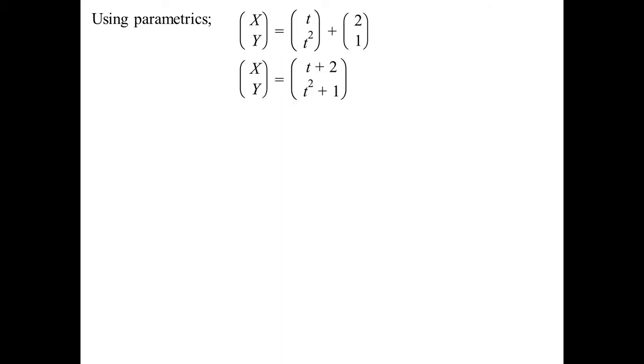If we go back to the idea of parametrics, instead of writing it as little x and little y, I could have written the equation of the parabola in parametrics as (t, t²). So x equals t, y equals t squared. I can add the two vectors together. My new parabola has parametrics (t plus 2, t squared plus 1). I can now come up with the new equation by eliminating the parameter. Capital X was t plus 2, so rearranging, the parameter is X minus 2. Substituting into Y gives the equation we came up with before — just with capital Y and capital X instead of little y and little x.